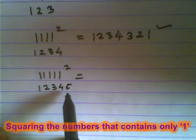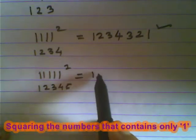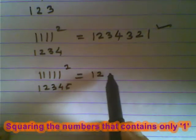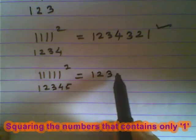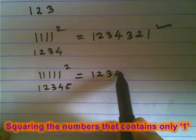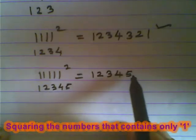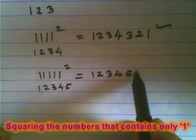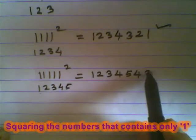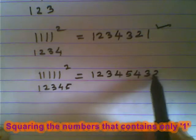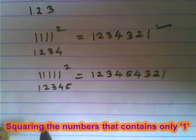So, it will be 1, 2, 3, 4, 5. Correct? So, first write 1, then 2, then 3, then 4, then 5, then go in a reverse direction. 4, 3, 2 and 1.